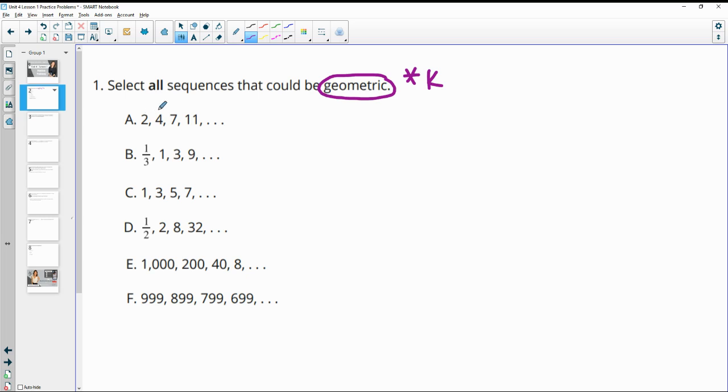So in this first one we see that we multiplied by two, and then four times two would be eight, not seven. So this is not multiplying by the same thing. It's actually going plus two, plus three, plus four. So that is not geometric.